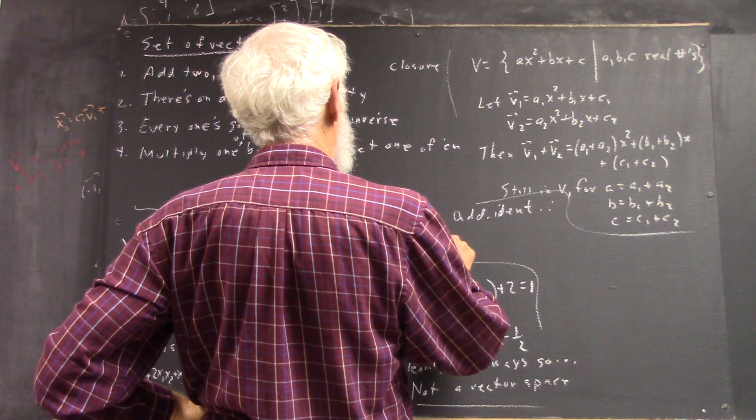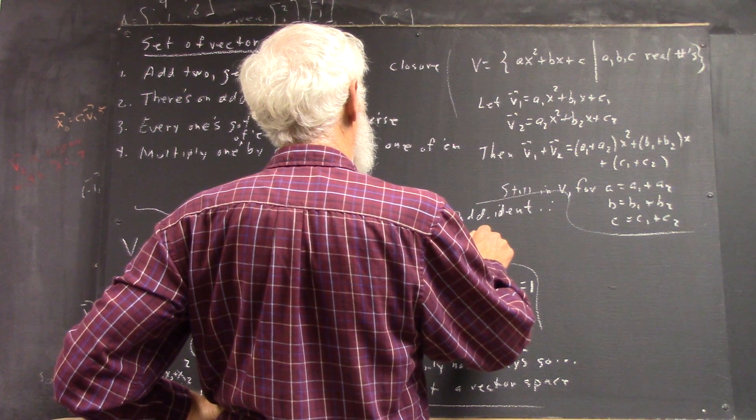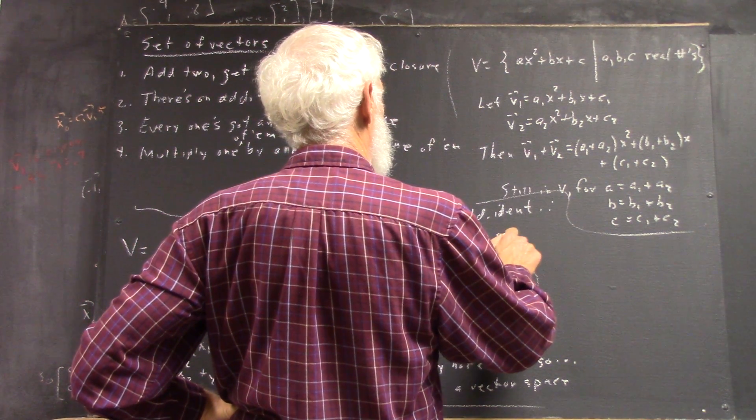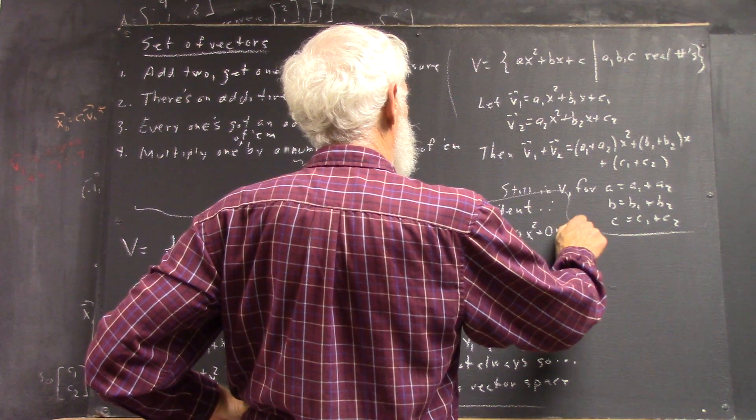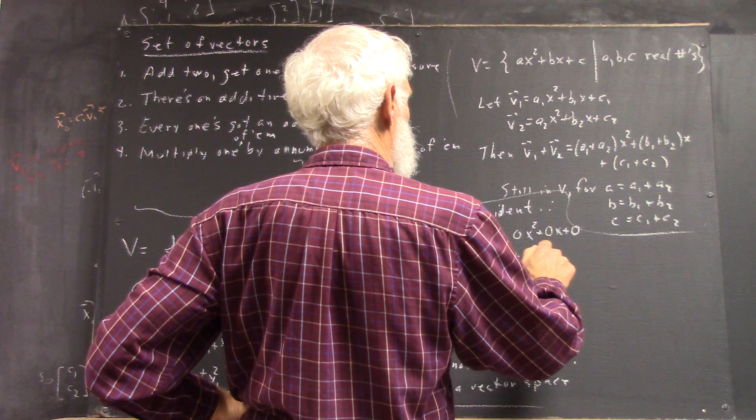A equals 0, B equals 0, C equals 0. So you have 0x squared plus 0x plus 0, which is, of course, just 0.